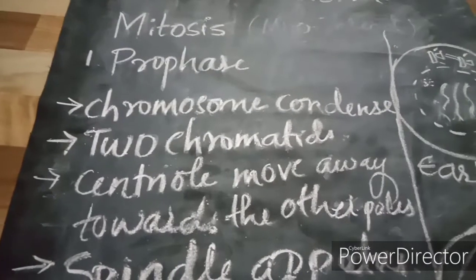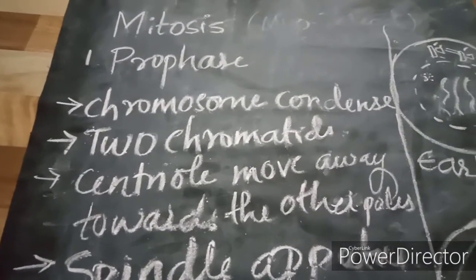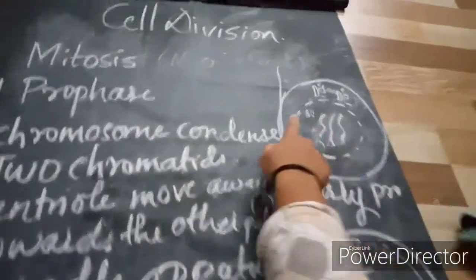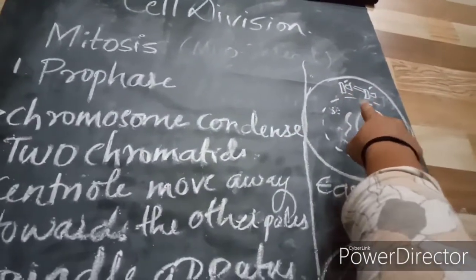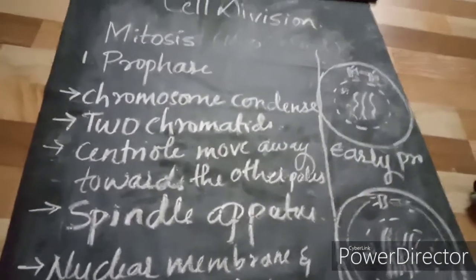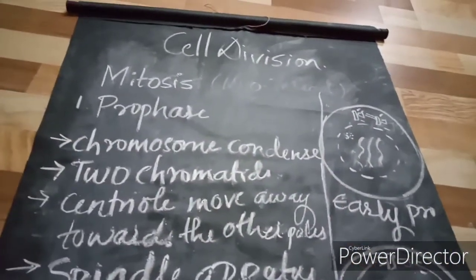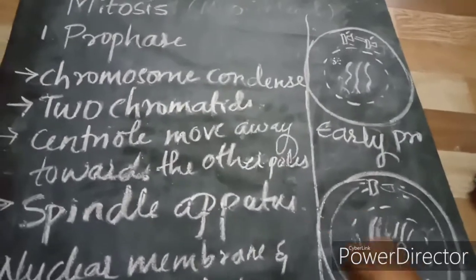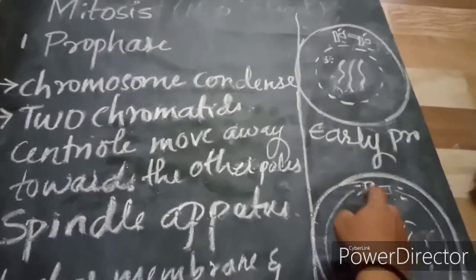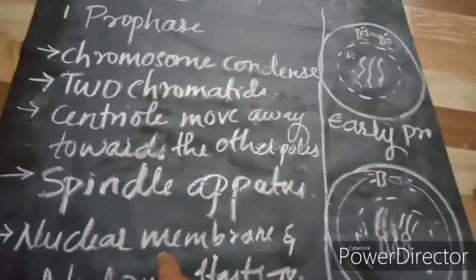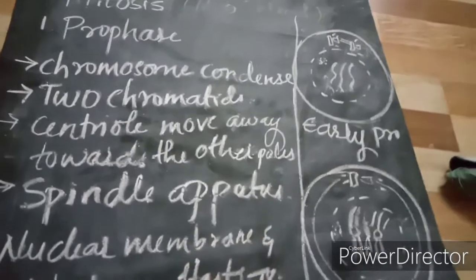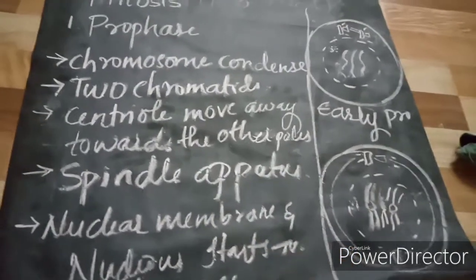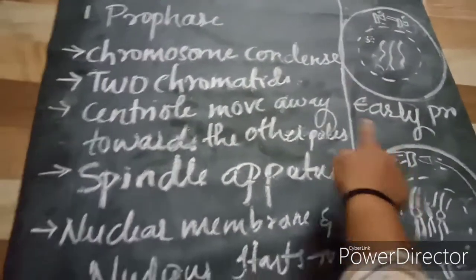The centrioles, which have already been duplicated during the S phase of the cell cycle, start to move to the opposite poles. There is a formation of thin, delicate fibers around each pair of centrioles — these fibers appear like stars, hence they are known as asters. Along with the asters, there are long thin delicate fibers known as spindle fibers.